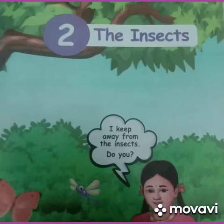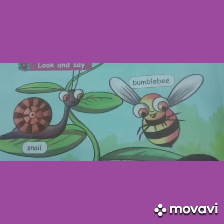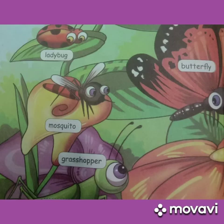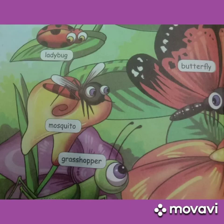Unit 2: The Insects. Let us learn the names of insects. Snail — S-N-A-I-L. Bumblebee — B-U-M-B-L-E-B-E-E. Ladybug — L-A-D-Y-B-U-G. Butterfly — B-U-T-T-E-R-F-L-Y. Mosquito — M-O-S-Q-U-I-T-O. Grasshopper — G-R-A-S-S-H-O-P-P-E-R.